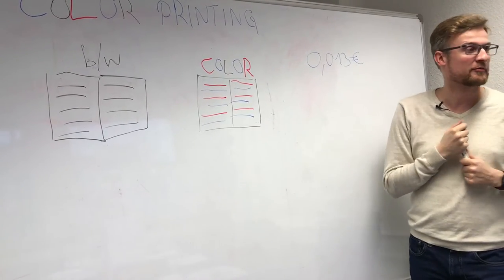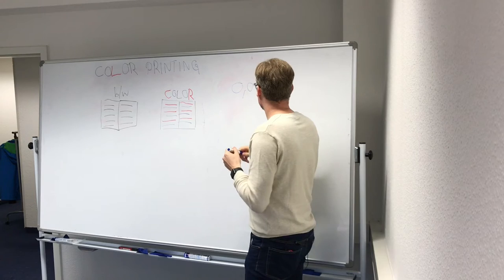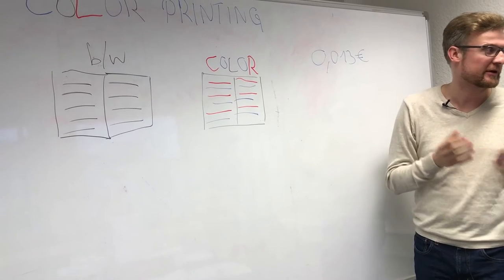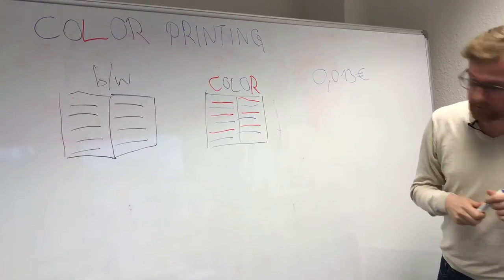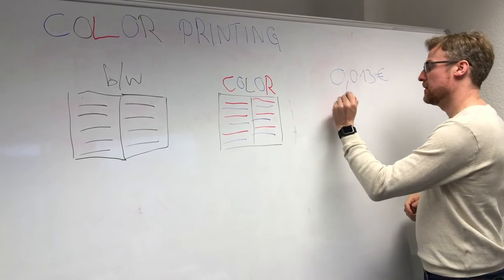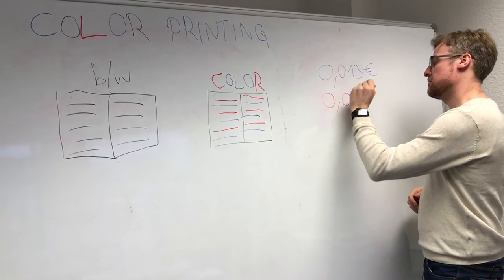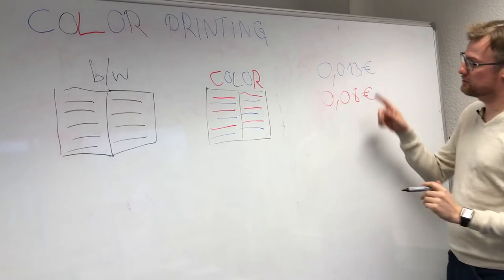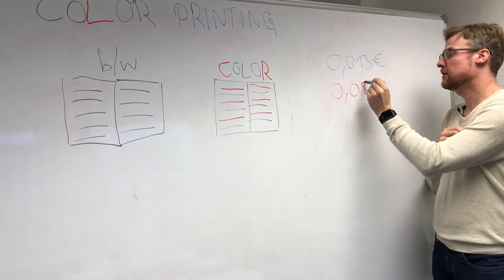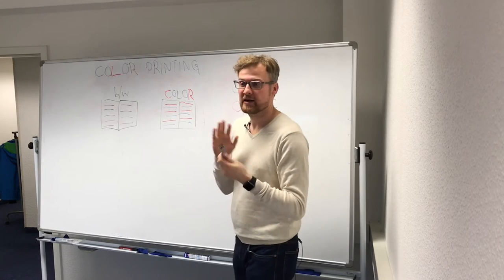If we have a book of 400 pages, on top of this times 400 come the cover and the process costs, handling costs like wrapping, for example. And for a color page, let me take another color for that, it's 0.08 euros. You already see that's about six times the price of a black and white page. Now, why is that?